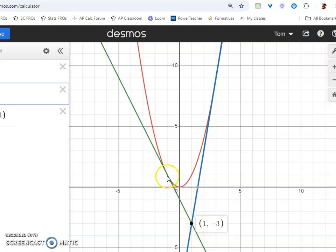And then this should be at the ordered pair negative 1, comma 1. Yeah, we do have the intersection point between the parabola and the line at negative 1, comma 1.